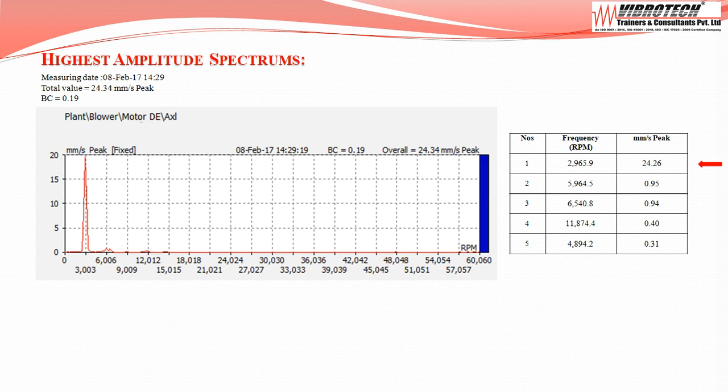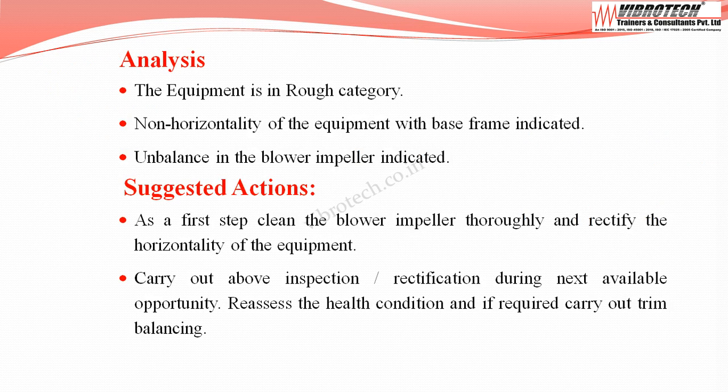Going through the spectrum, the dominant peak frequencies at the motor drive end are at 1× the running RPM. This indicates non-horizontality of the base frame and unbalance in the blower impeller. The equipment is confirmed to have both non-horizontality of the base frame and unbalance in the blower impeller.